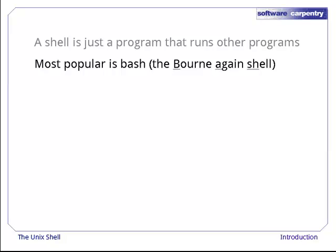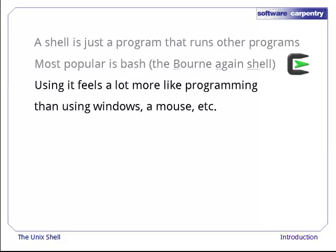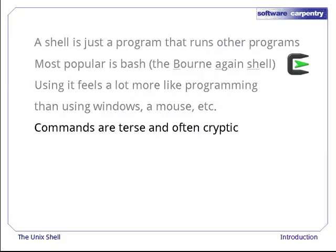Bash is the default shell on most modern implementations of Unix, and also comes with Cygwin, the Unix on Windows toolkit that we're using in this course. Using it, or any other shell, feels a lot more like programming than like using Windows and mice. Commands are terse, often only a couple of characters long, and their names are often cryptic.